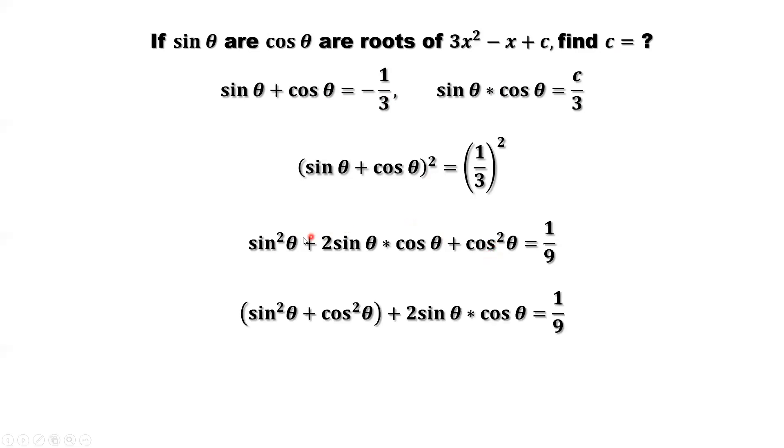So here, I will group the first and the last two terms together. This equals 1. Sine squared theta plus cosine squared theta equals 1. Substitute this one by 1, move to the right-hand side. This implies 2 sine theta times cosine theta equals 1 over 9 minus 1 equals negative 8 over 9.